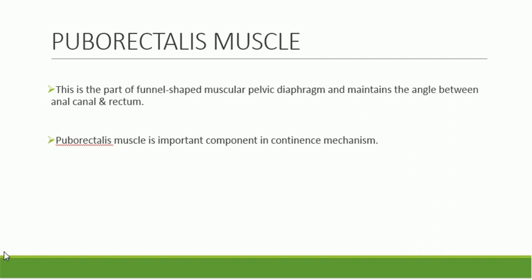The puborectalis muscle derives its nerve supply from the sacral somatic nerves and is functionally distinct from the external anal sphincter. The position and length of the anal canal, as well as the angle of the anorectal junction, depends to a major extent on the integrity and strength of the puborectalis muscle sling. It also gives off fibers that contribute to the longitudinal muscle layer, and its role in continence is very important.